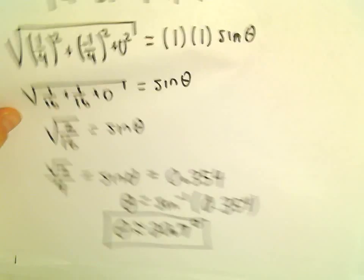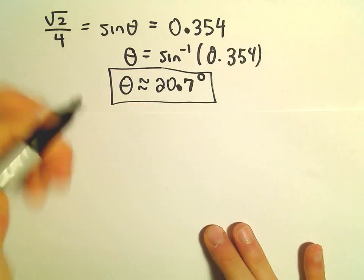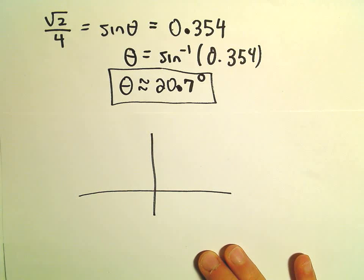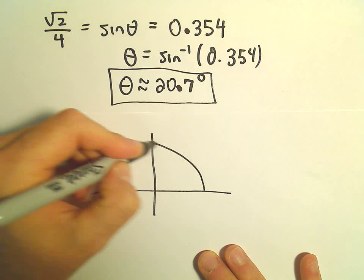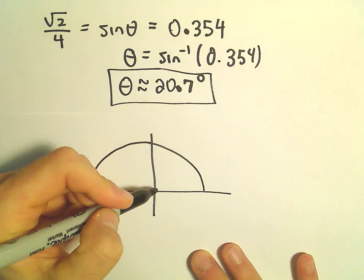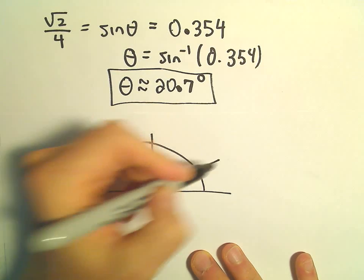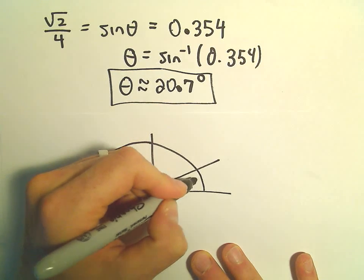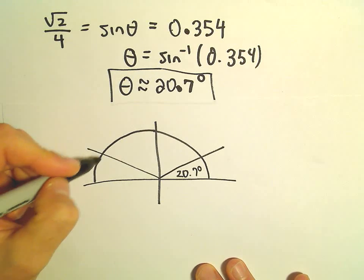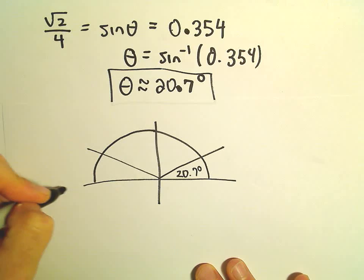Recall though, if we're looking at angles between zero and 180 degrees, we found one of the solutions to be twenty point seven degrees. There would be another solution in the second quadrant. And to get that one, we'll just take a hundred and eighty degrees.